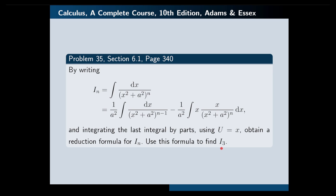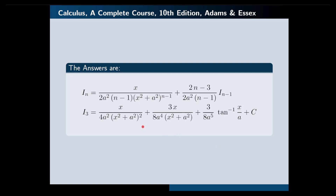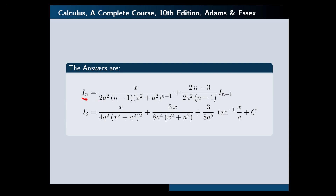If you do your calculations correctly, these are the answers that you will get. The reduction formula reads: I_n is equal to this expression plus this expression times I sub n minus 1. This relation relates I sub n to I sub n minus 1. And if you use this reduction formula, you will find this expression for I sub 3.